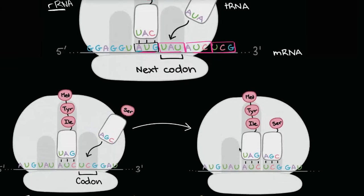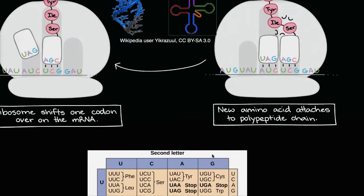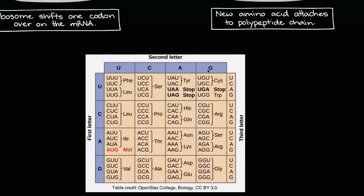It's not hard to find tables that show what the different sequences actually code for. You can take the first letter, the second letter, and the third letter and look up the different sequences. You can see AUG — adenine, uracil, guanine — codes for methionine. You could say cytosine, uracil, uracil codes for leucine. And it's not just one amino acid per codon — here you have four codons that all code for leucine.